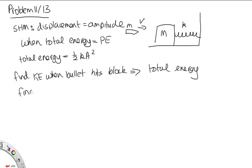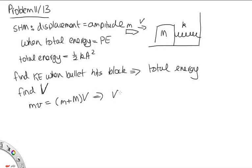Let's call it capital V — the velocity of the bullet plus the block when it just starts to move. The initial momentum is little m times little v, equal to the final momentum. The bullet and block have coalesced, so we have little m plus big M times big V. Therefore, big V equals little m times little v over little m plus big M.